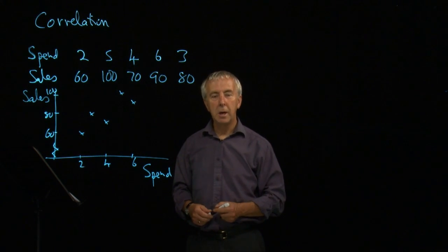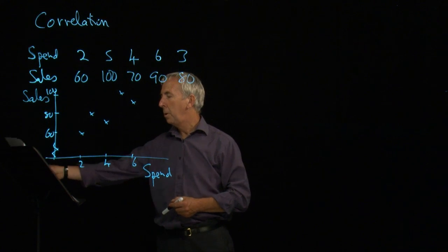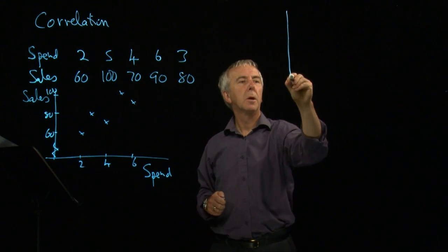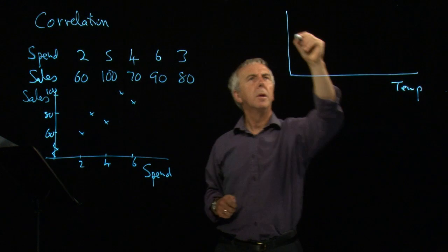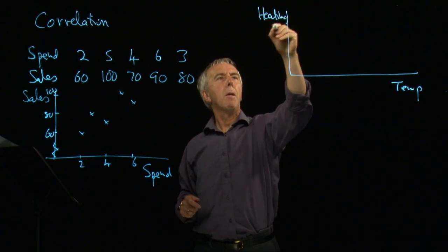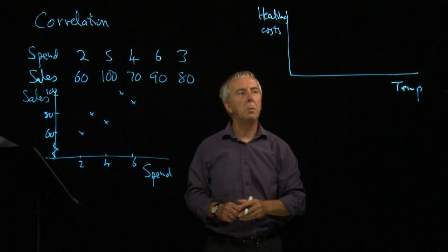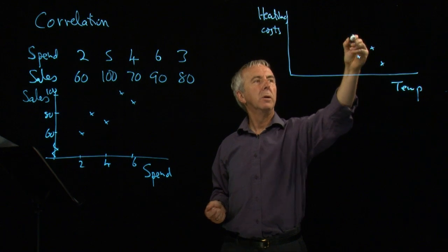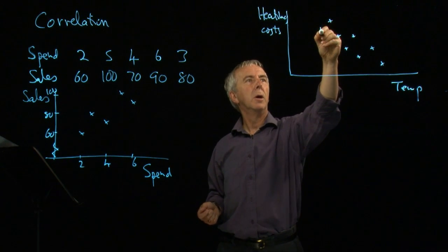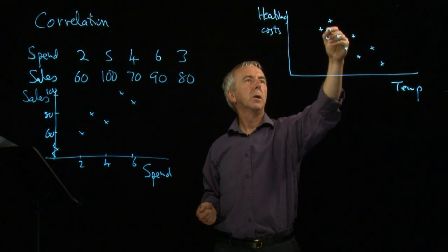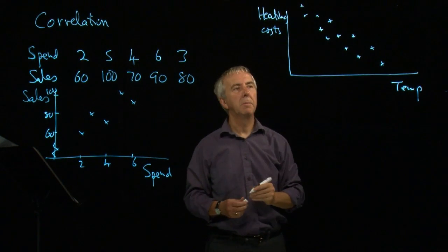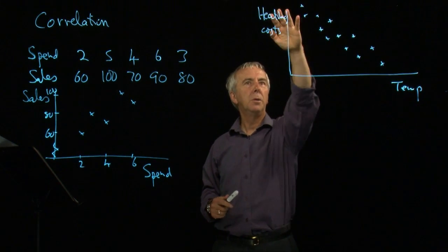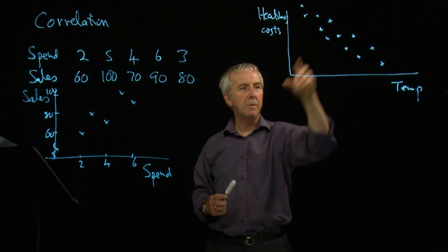We might equally get negative correlation. For example, let's look at heating costs and temperature in months of the year. The general effect is that the higher the temperature, the less we spend on heating. So over the 12 months of the year we might get a downward scatter pattern. Again, it's not exact, but we can see that generally the higher the temperature, the lower the heating costs. This is negative correlation.